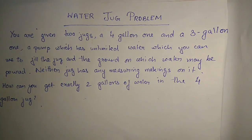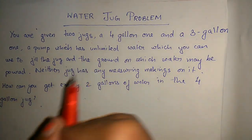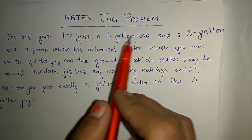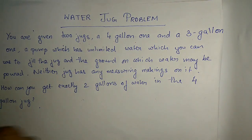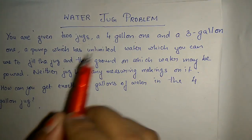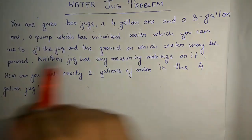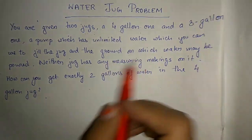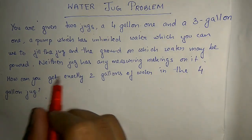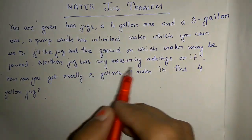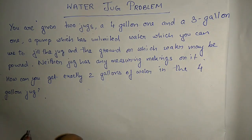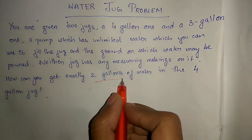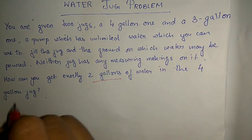Hello everyone, today I am going to talk about the water jug problem. The problem is that you are given two jugs: one with a capacity of 4 gallons and another with 3 gallons. A pump is provided which has unlimited water. You can use that pump to fill the jug, and you can pour water from the jug onto the ground. None of the jugs has any measurement marking on it. The problem is you have to fill exactly 2 gallons of water in the 4-gallon jug.